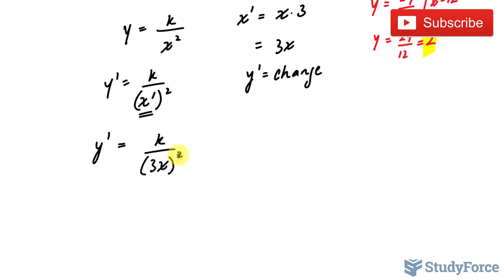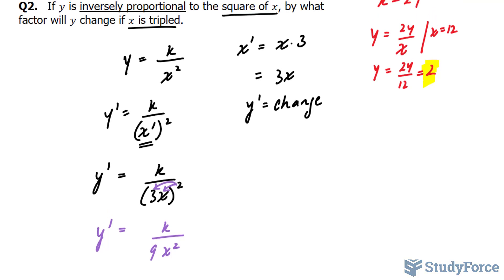I'll distribute this 2 to the 3 and to the x, where I'm left with k over 9x to the power of 2, y prime. And if you take a look at the way we set up y at the beginning, I said that y equals k over x squared, which is shown right here.